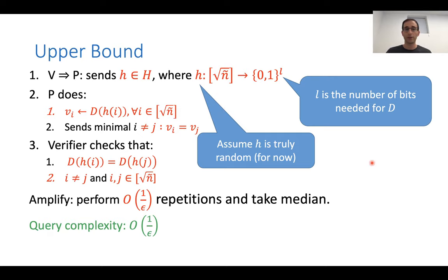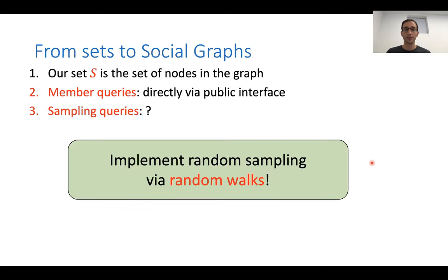So, before I talk on H, I just say how I go from sets back to social graphs. So, the set S is, of course, gonna be just the set of nodes in the graph. That's fine. And that's what we want to estimate the size of the graph. So, just the set is the number of nodes, all the nodes in the graph. Membership queries. Well, we just assume we have membership queries. So, this is directly via the public interface of the network.